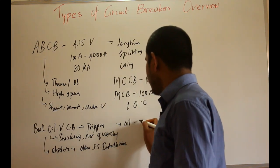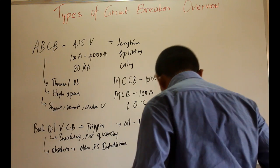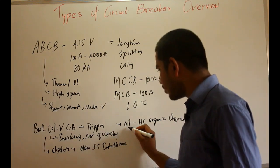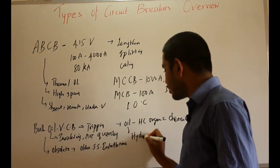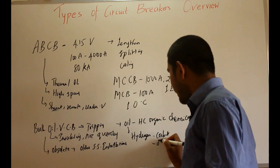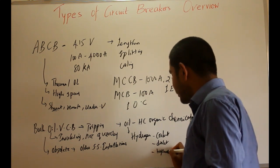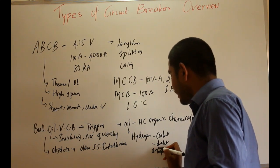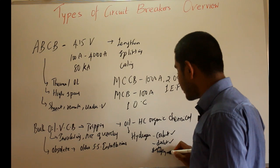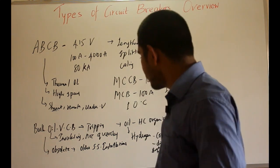The oil is a hydrocarbon organic chemical material. Due to arcing, decomposition of this oil occurs and generates hydrogen. This hydrogen has two important uses: it works as a coolant, it has high dielectric strength, and it is thermally highly conductive — meaning it can conduct heat very effectively. So hydrogen gas can be used to quench the arc, or you can go for self-blast mechanisms.